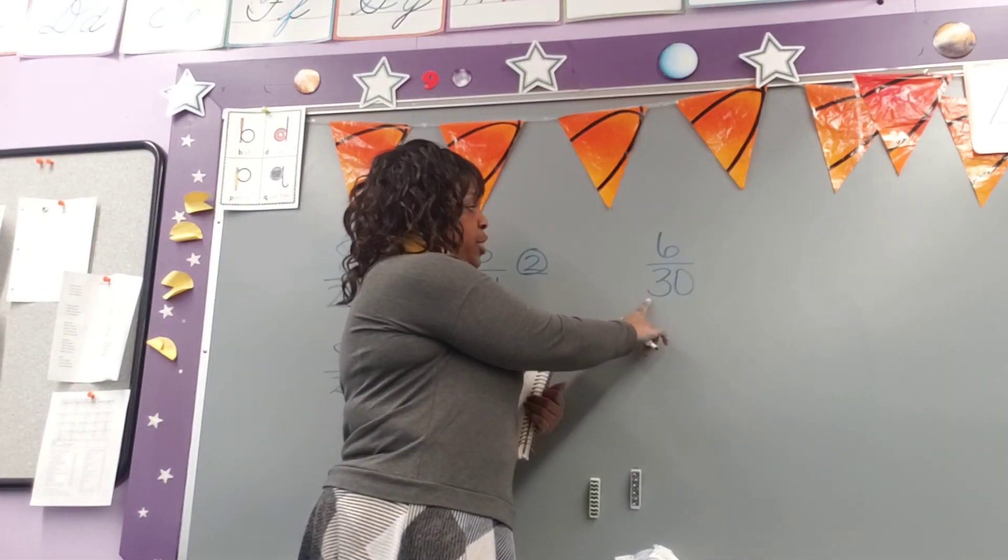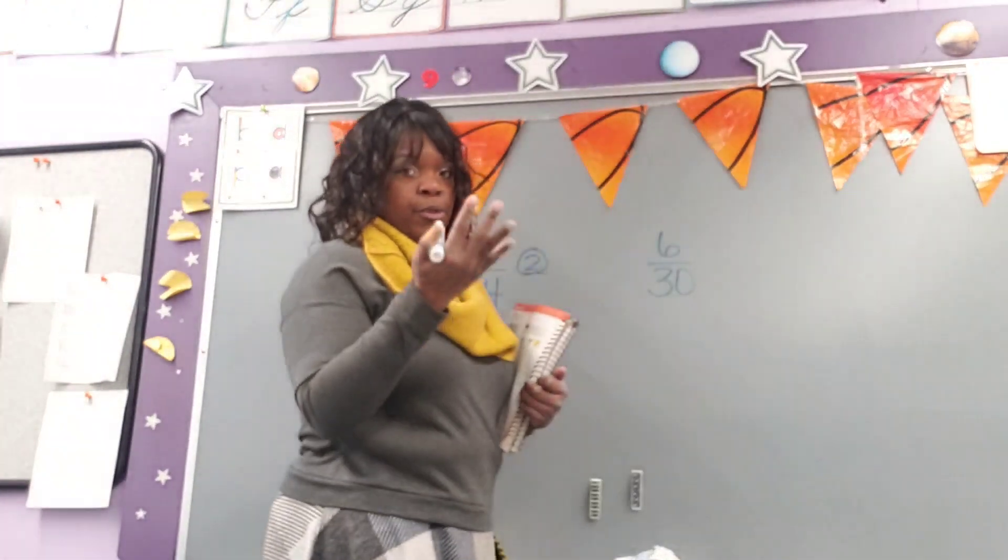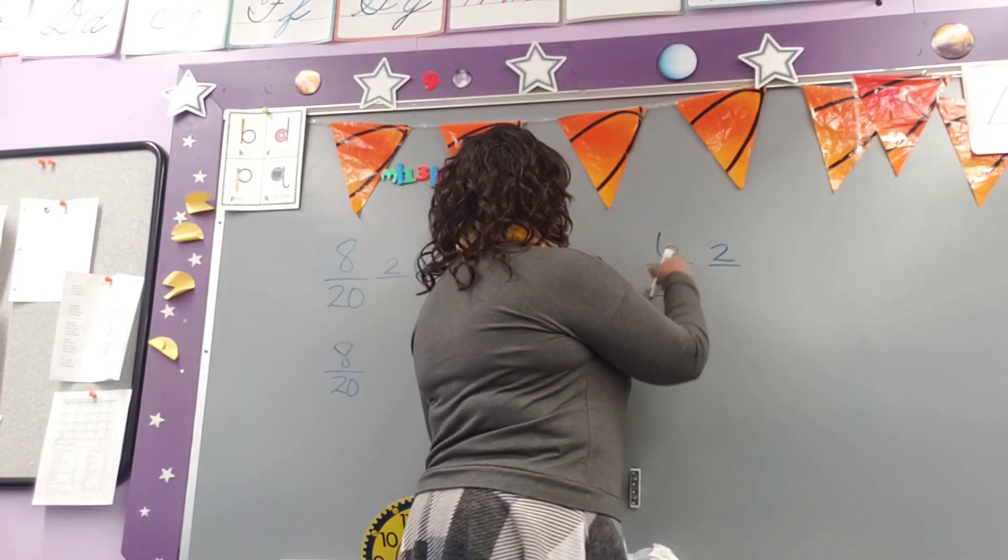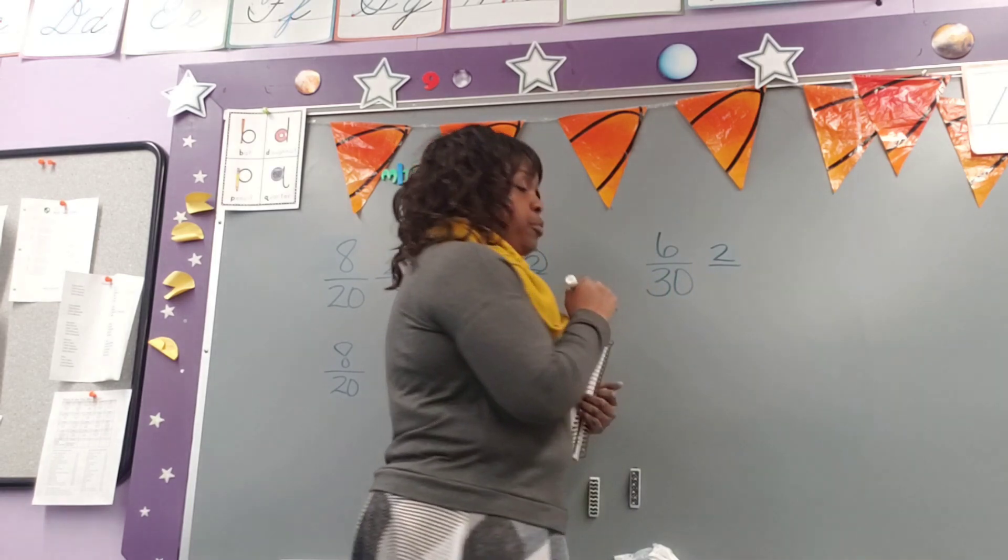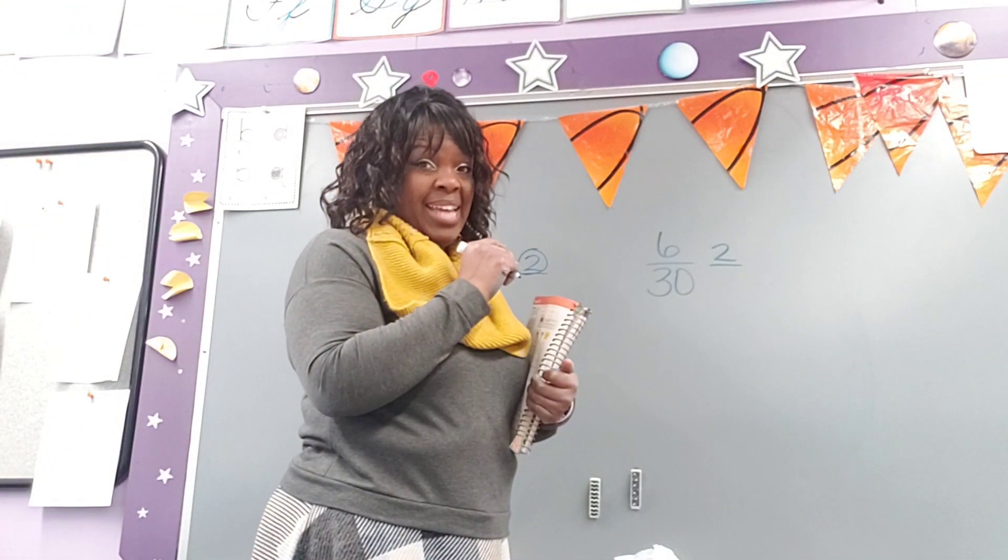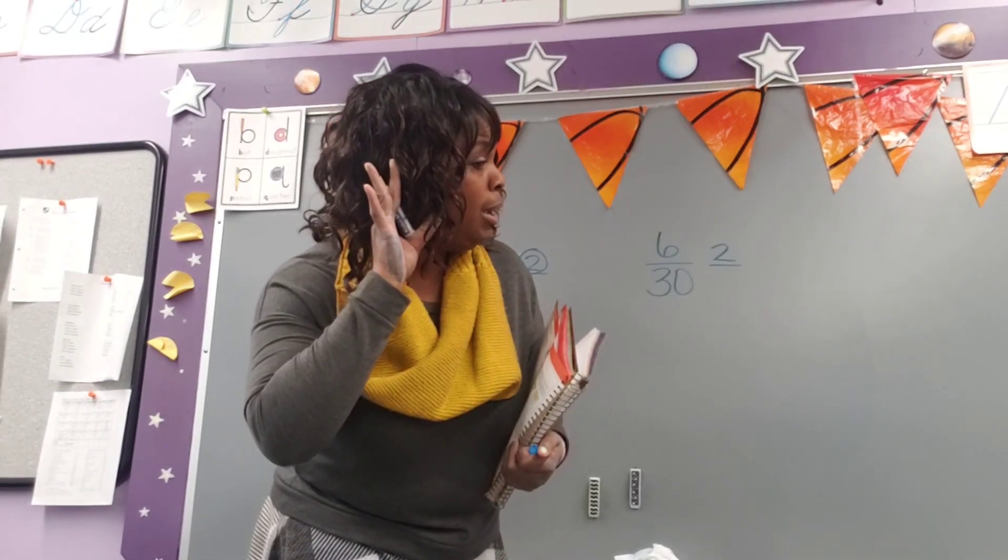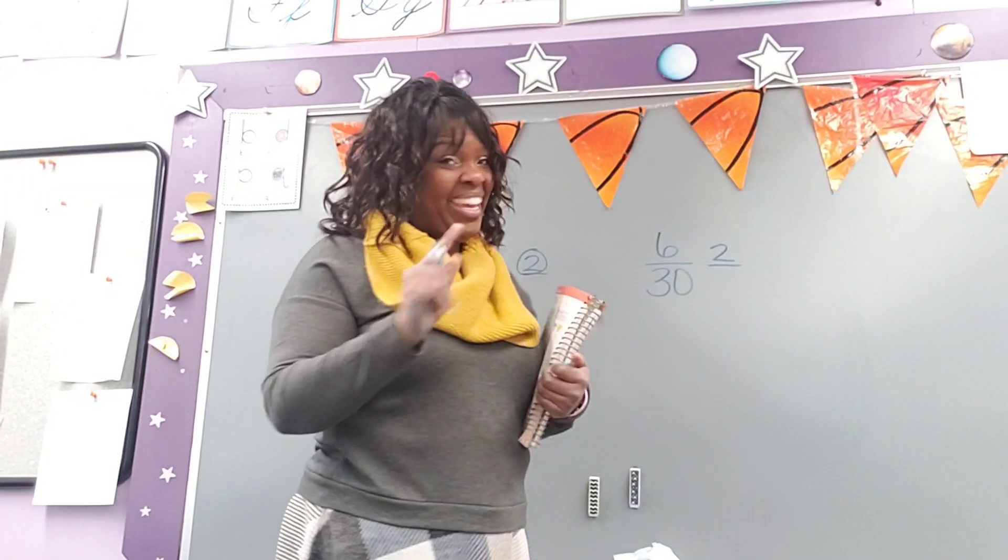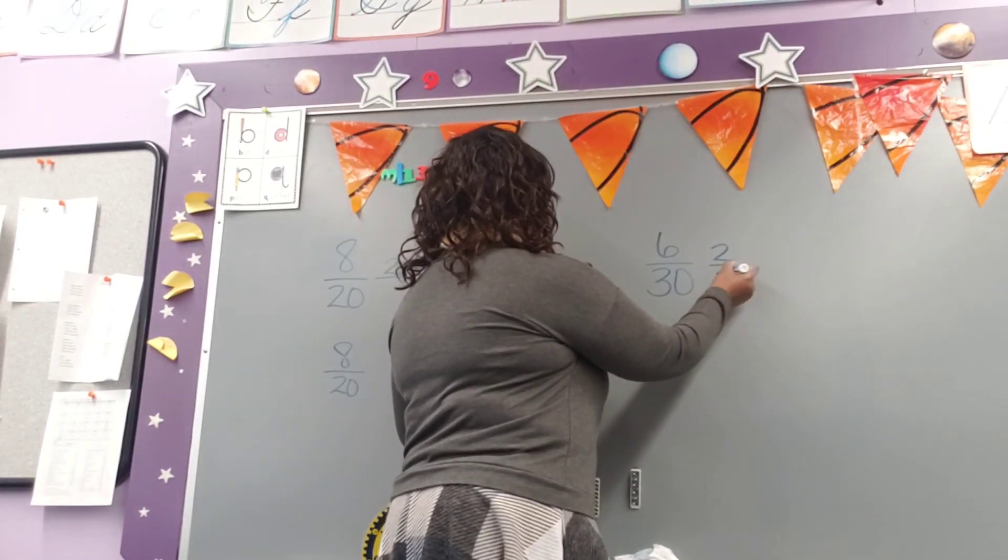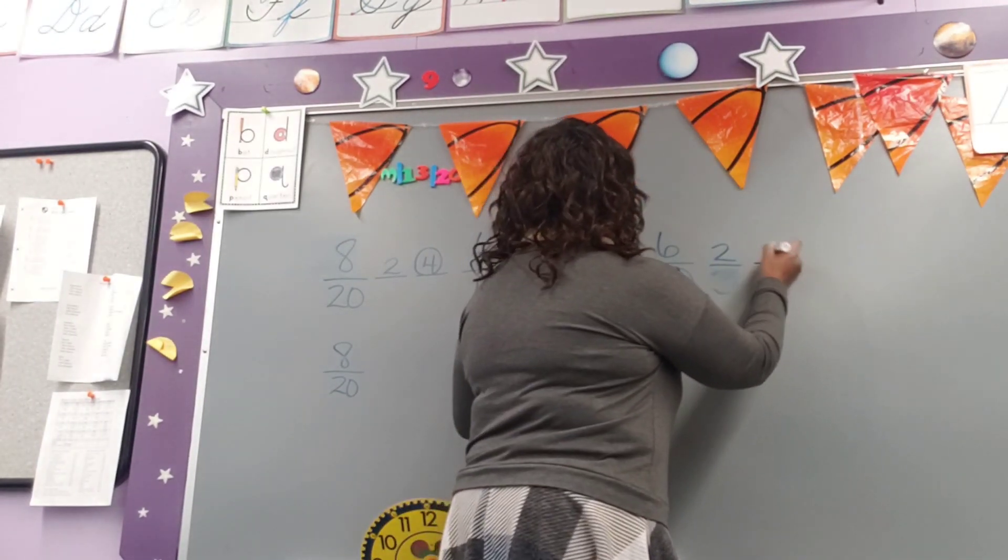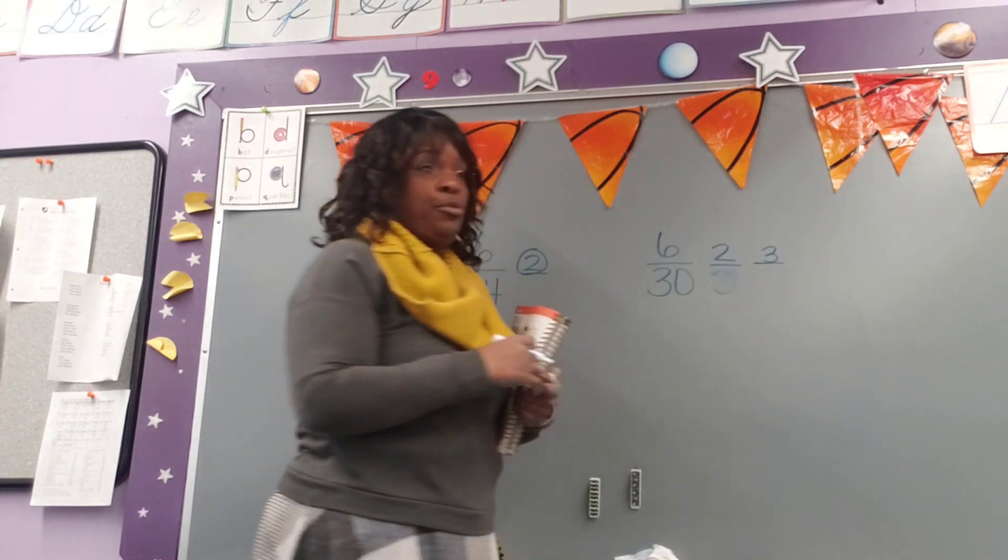And then the last one, 6/30. We start with our 2 again, and then we go and we see if we can do both by 3. Can we divide 6 and 30 by 3? Tell me. Yes, we can. Very good. So we can, oh sorry, I'm not supposed to do that.